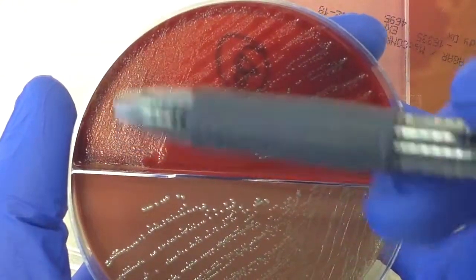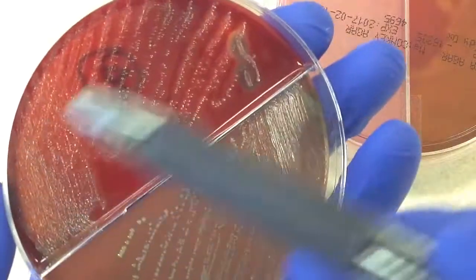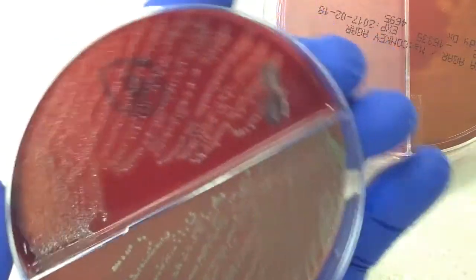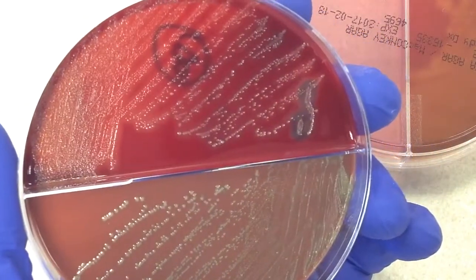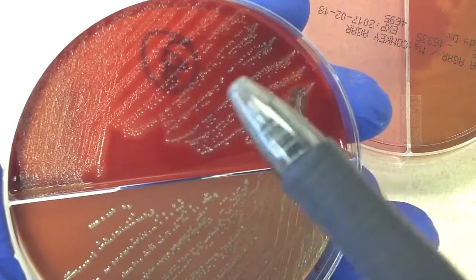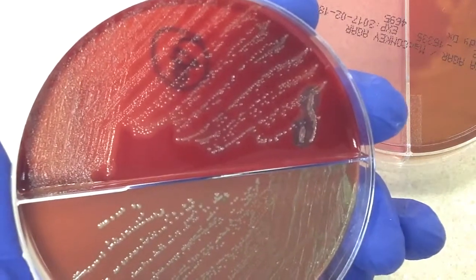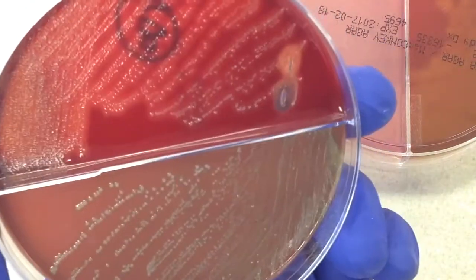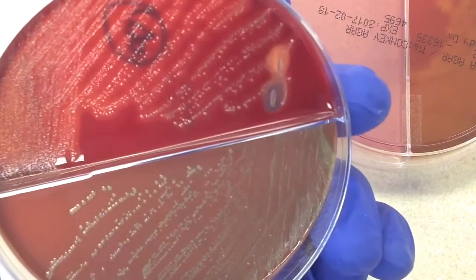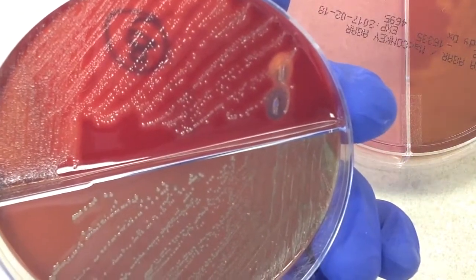So on these bi-plates, when we're judging how much of something there is, if it were just here, it would be rare, few, moderate, and then many. Now in the video, it's kind of hard for you to see all the little details, but I can definitely see some normal flora coming in here. So I'm going to say moderate normal genital or vaginal flora, many beta hemolytic colonies, identification and susceptibility testing to follow.